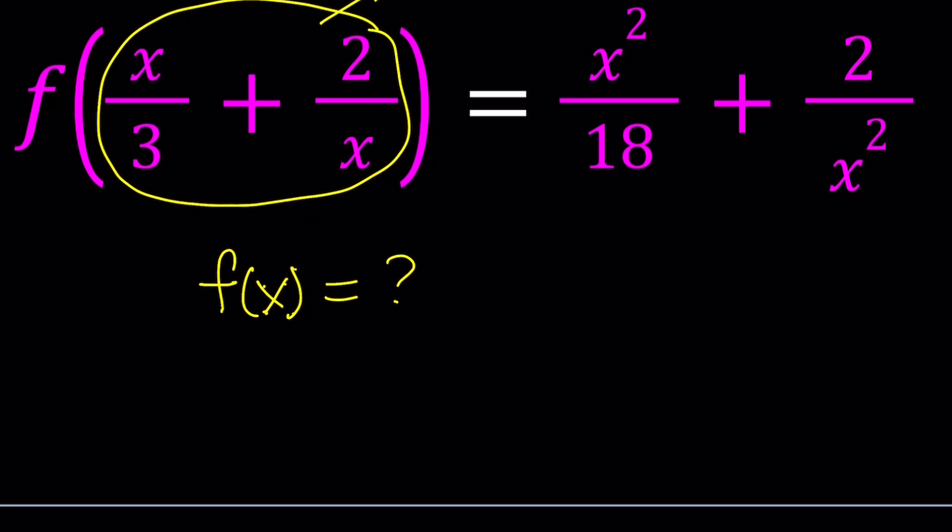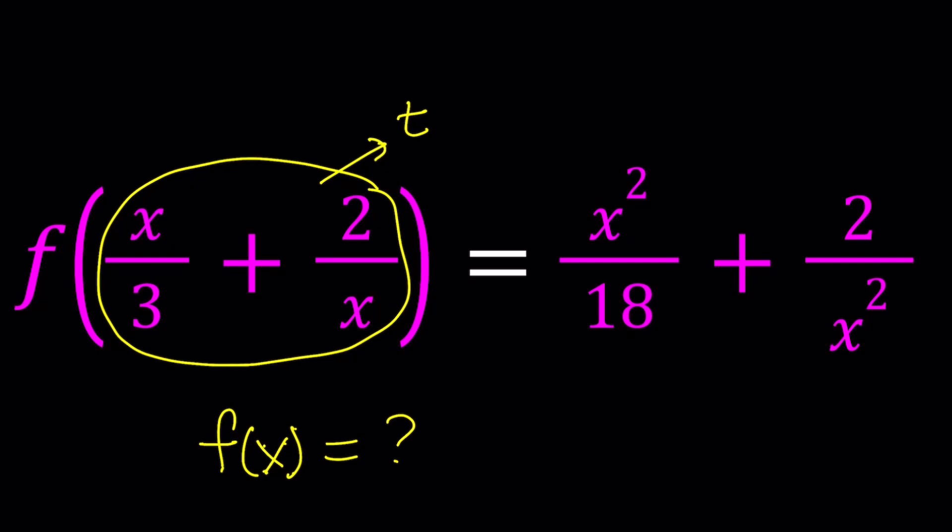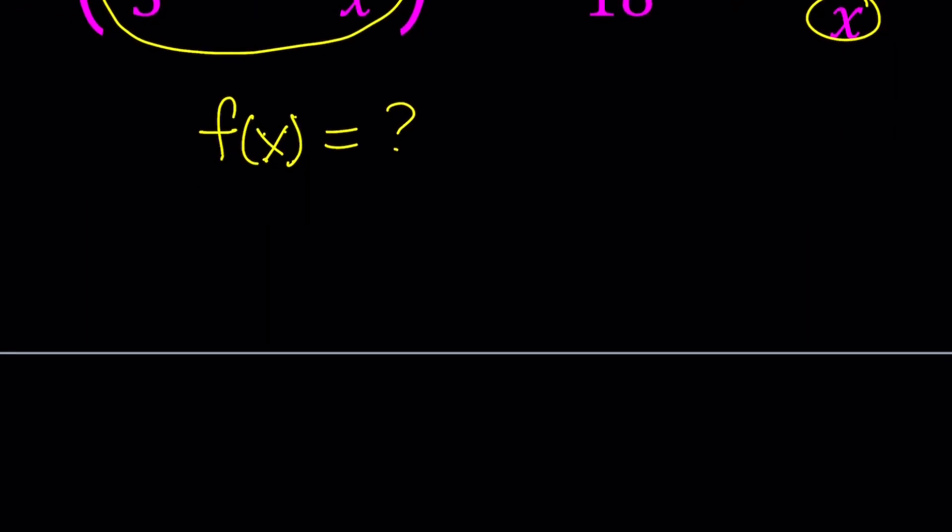So the question is then, if this equals t, I should be able to write x in terms of t so I can plug in on the right hand side. Make sense? So we're going to start by setting x over 3 plus 2 over x equal to t and I will call this the first method. Okay, let's proceed.